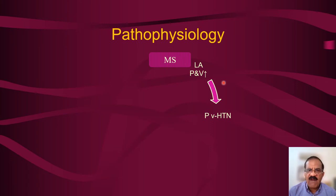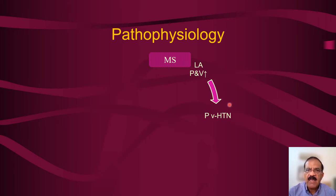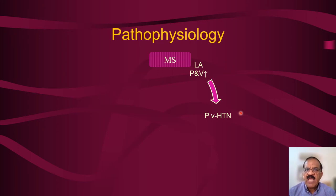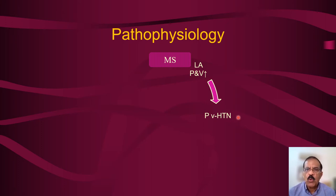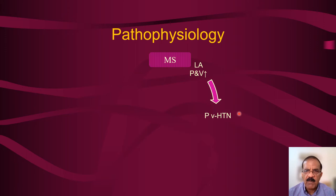Since there is no valve between the left atrium and the pulmonary veins, the pressure which develops in the left atrium backs up into the pulmonary veins, causing pulmonary venous hypertension. Normally pulmonary veins have very low pressure — about 12 mmHg — but in this case pressure builds up. This pulmonary venous hypertension is a passive phenomenon; if you can open up the mitral valve, it should be reversible. This is important to differentiate from pulmonary arterial hypertension, which may be irreversible.